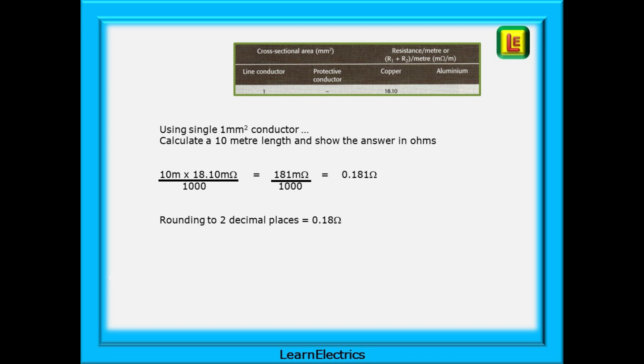The figures in the table are quoted in milliohms but we need to know the ohms since ohms is what our test meters will display. Using single 1 millimeter conductor as an example, we want to calculate the resistance of a 10 meter length and show the answer in ohms. To do this, multiply the length by the given milliohms and divide by 1000. In our case 181 milliohms becomes 0.181 ohms rounded to 0.18.